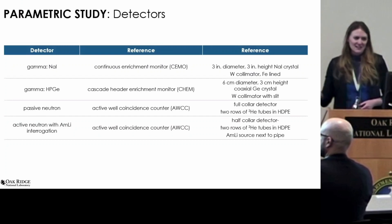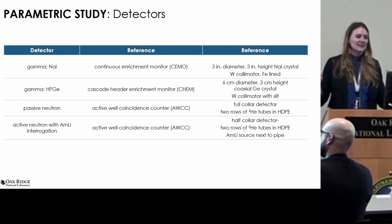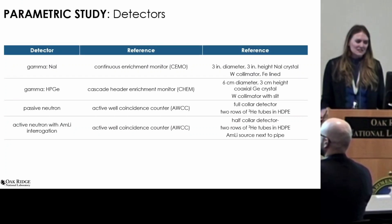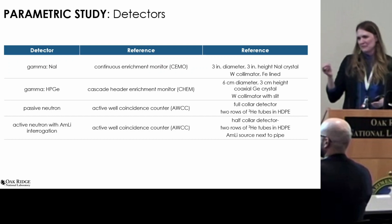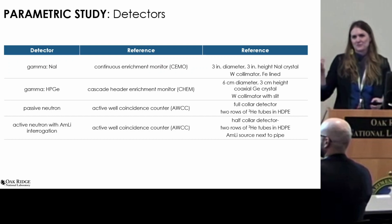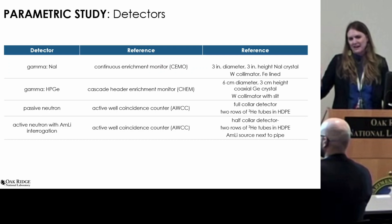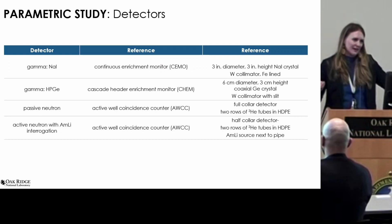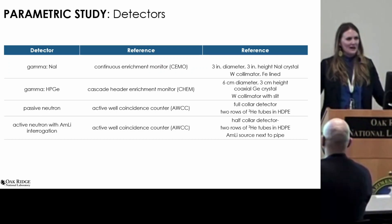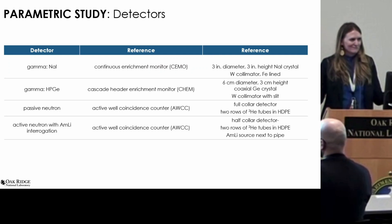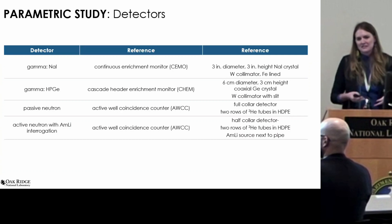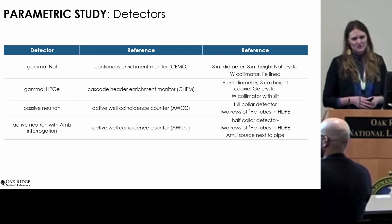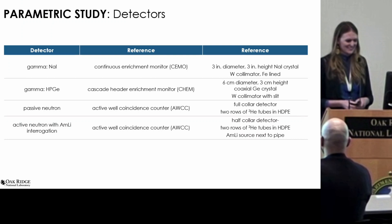On the detector side, we looked at sodium iodide, high-purity germanium, passive neutron, and active neutron. For active neutron — a bit more of an ask of developers — we would put something like an americium-lithium source on one side of a pipe or tank and have a detector on the other side. So we are creating a radiation environment where you might only have low-enriched uranium. It is an ask of some sort, but we're still driving things in the direction of detectors we can put on the outside of your pipes instead of inside.